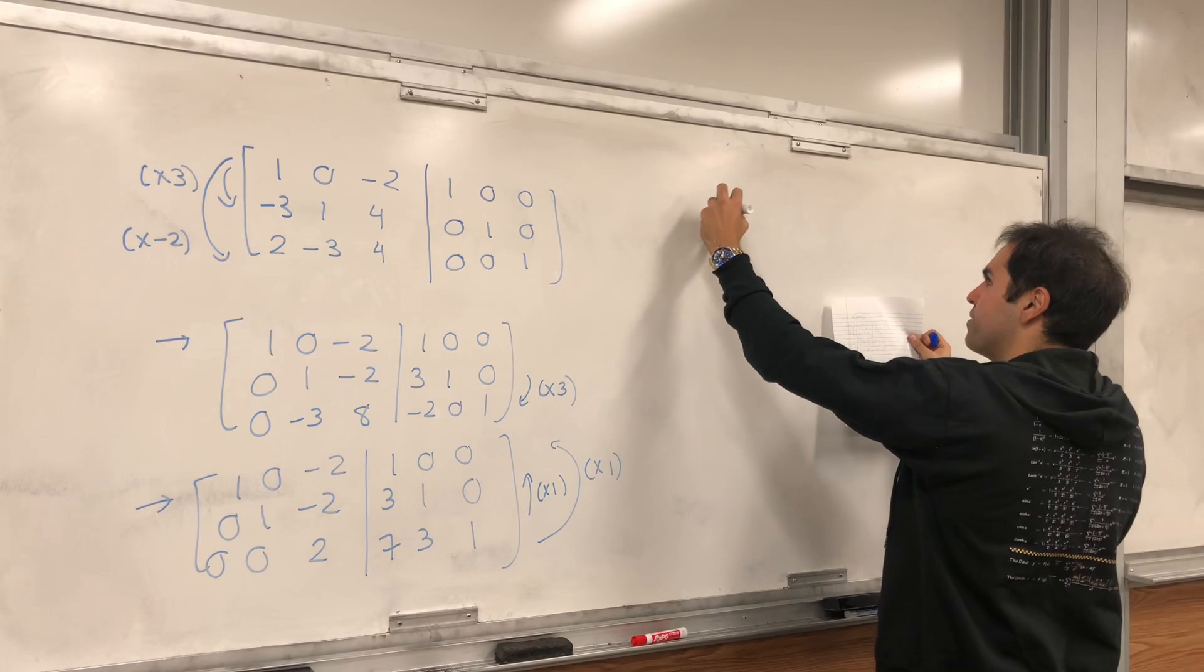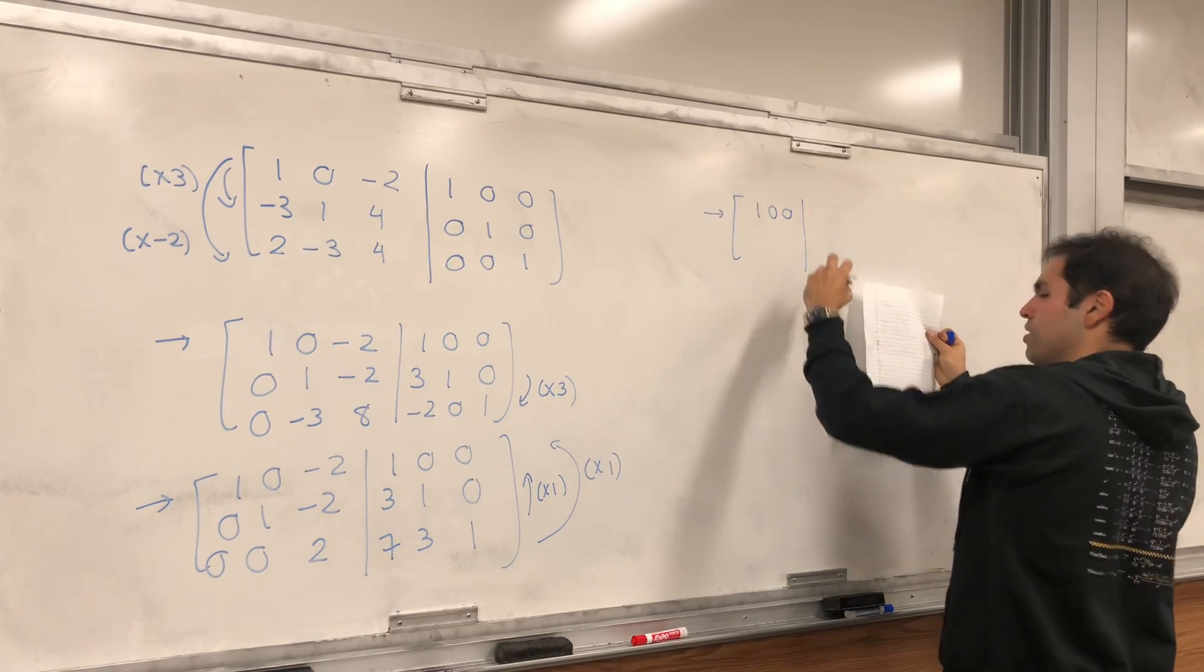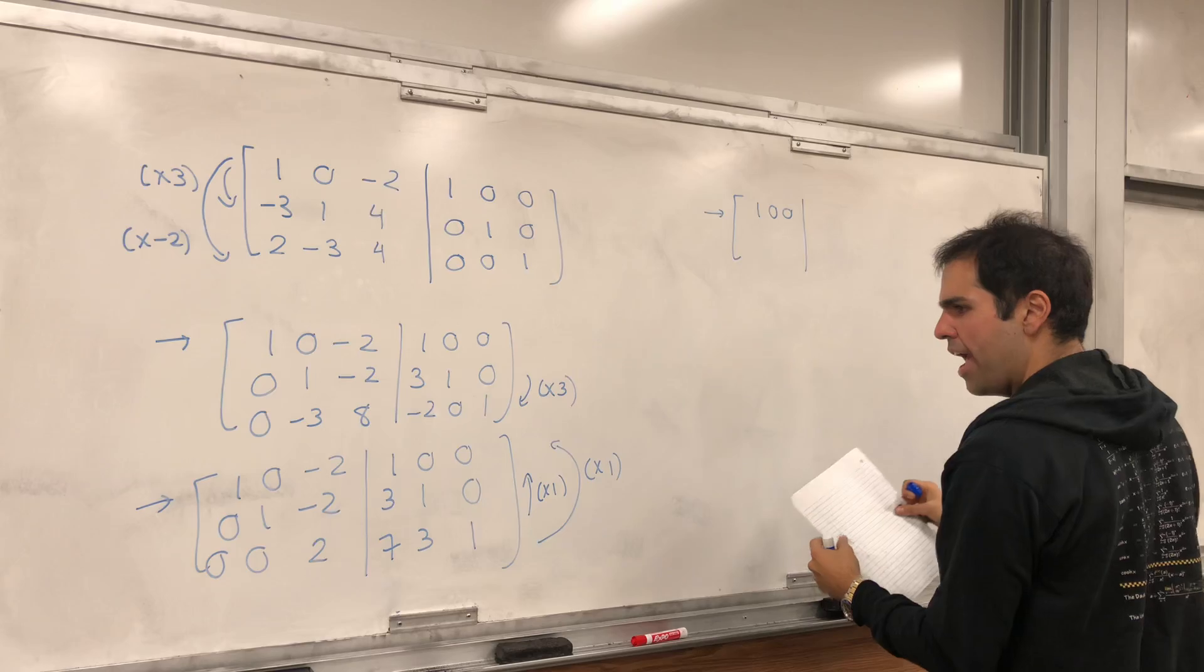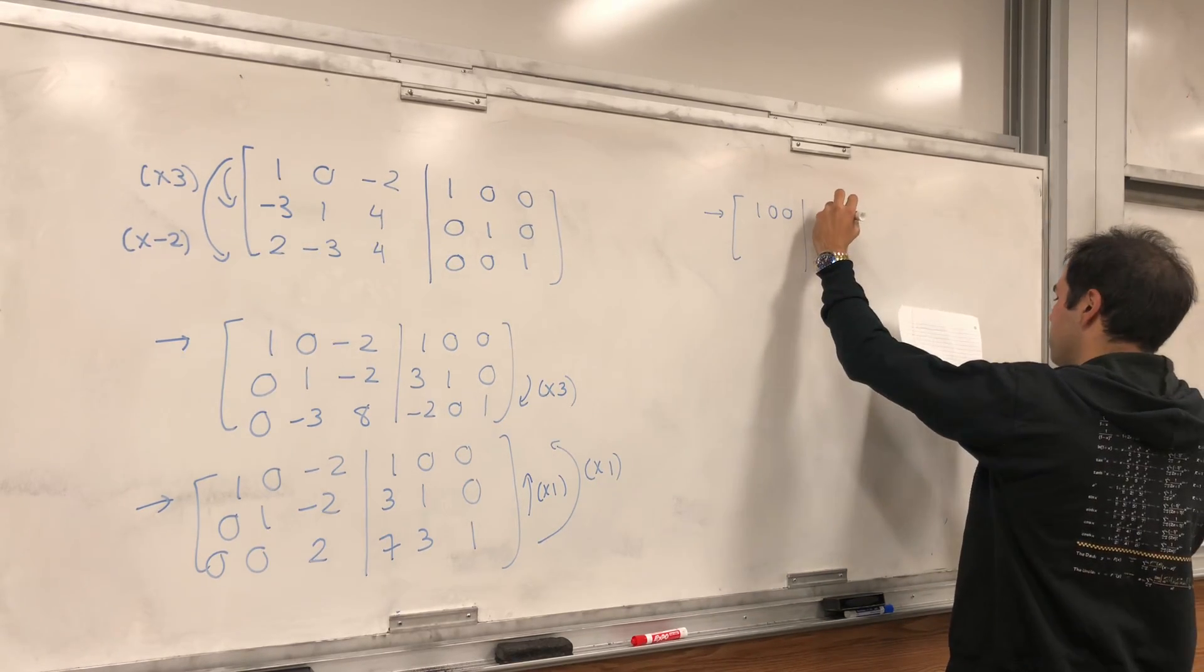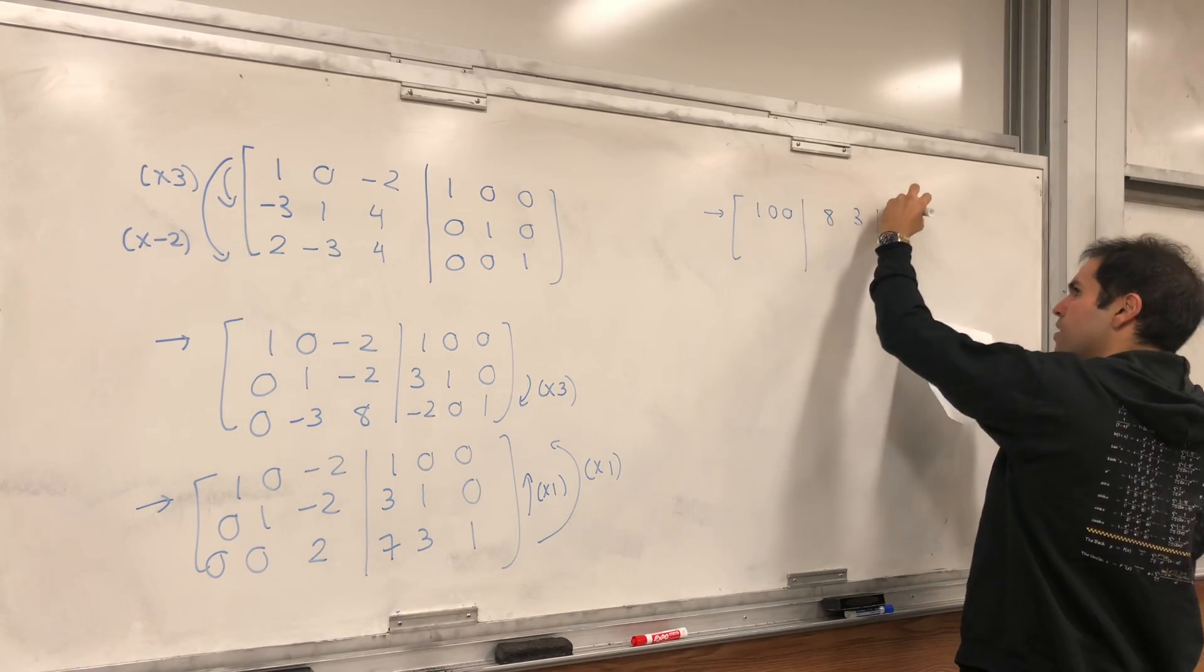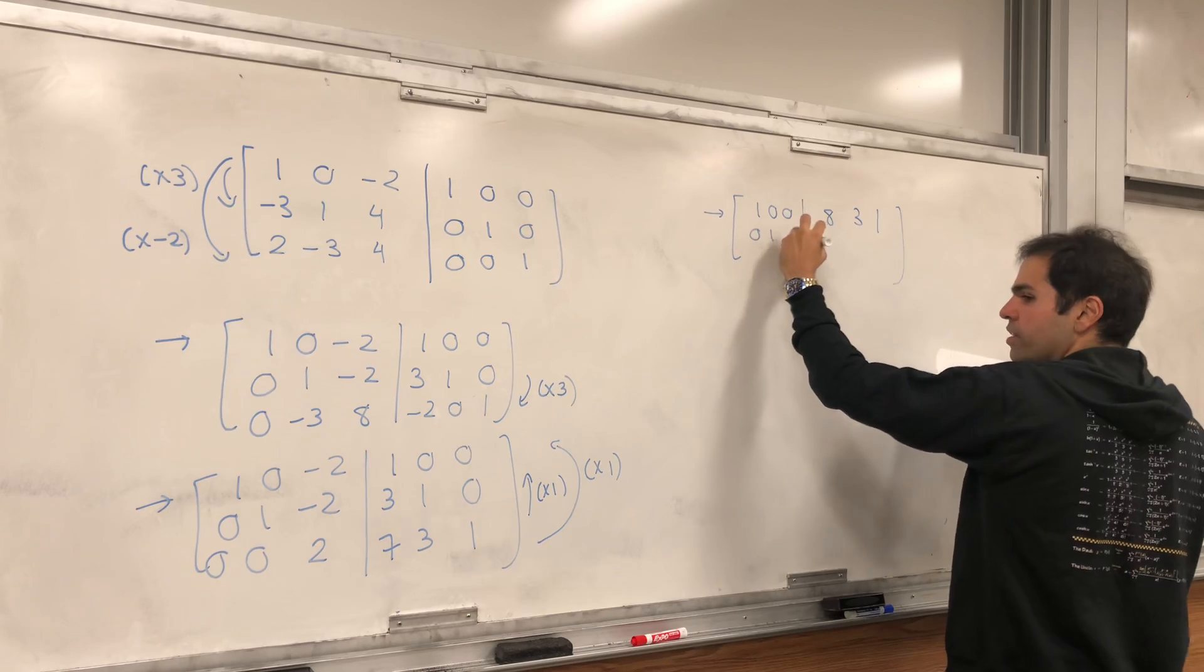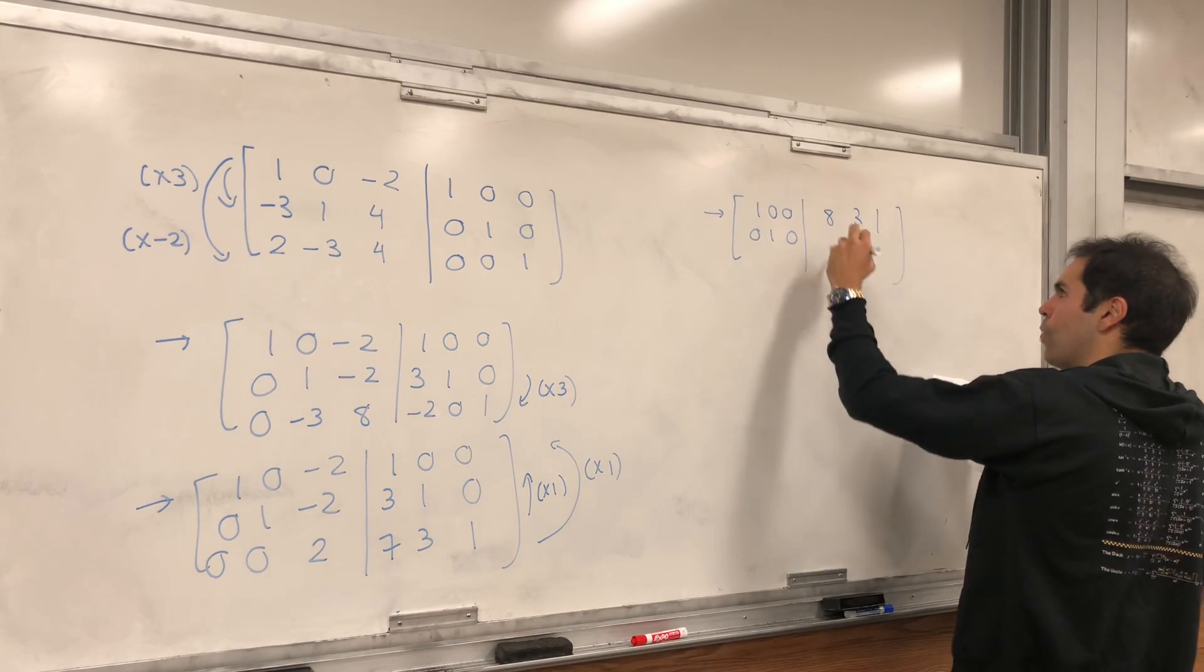and you get then 1, 0, 0, 0, I believe, so 8, 3, 1, and 0, 1, 0, and then let's see, 10, 4, 1,